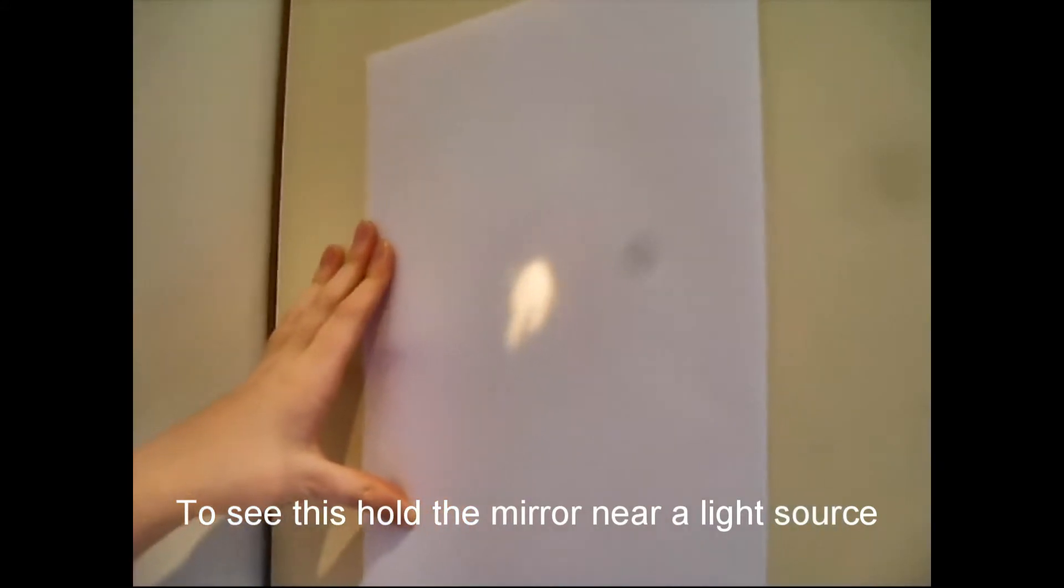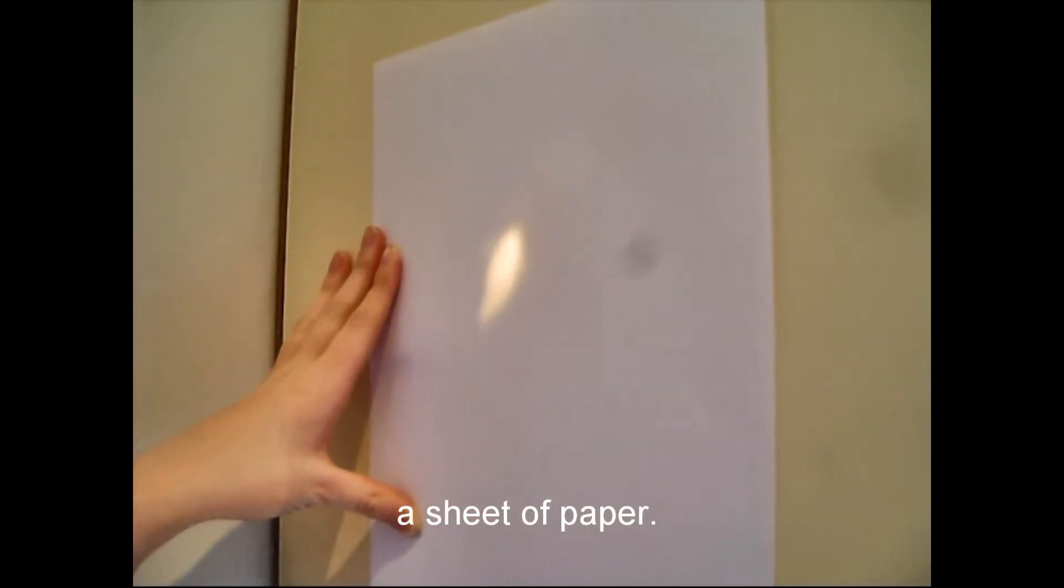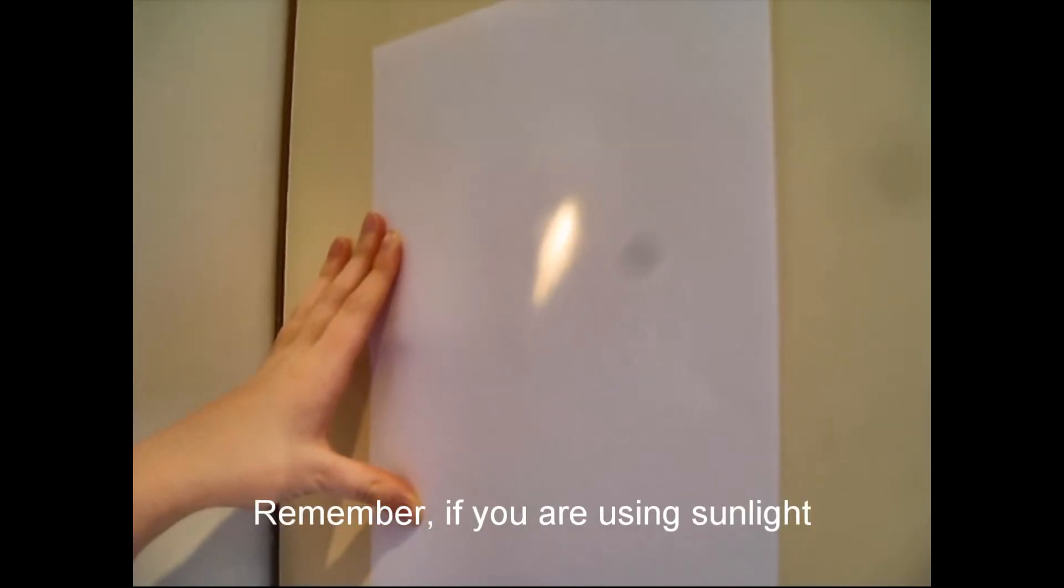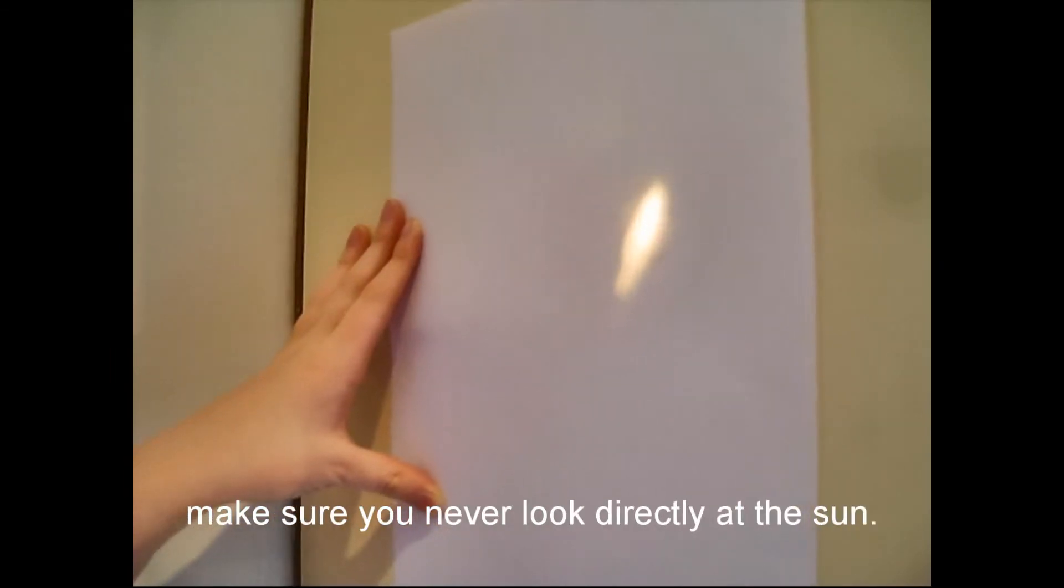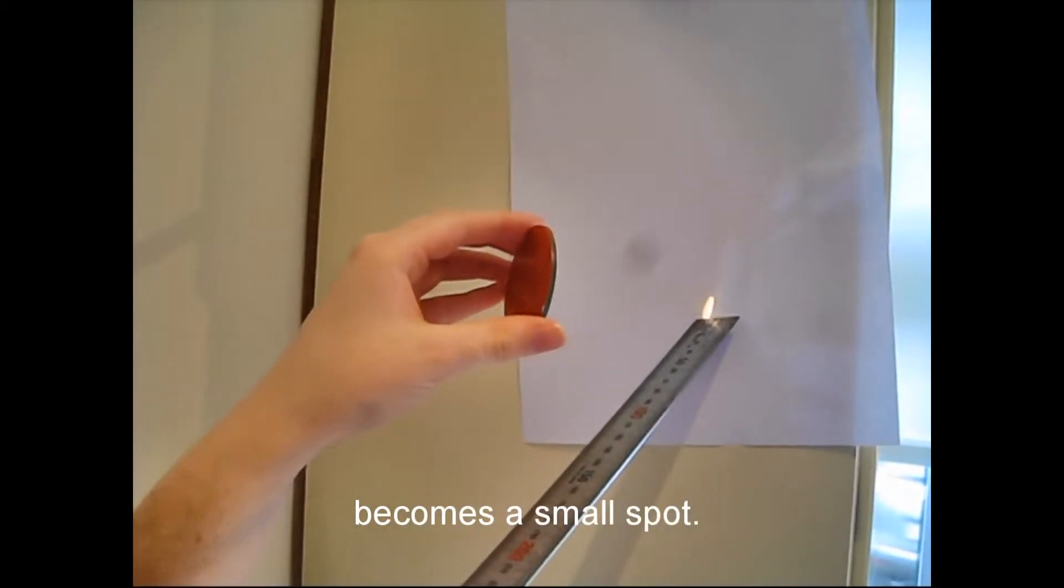Concave mirrors can be used to collect light. To see this, hold the mirror near a light source or in sunlight and reflect the light onto a sheet of paper. Remember, if you are using sunlight, make sure you never look directly at the sun. Move the paper until the reflected light becomes a small spot.